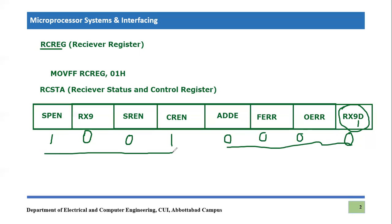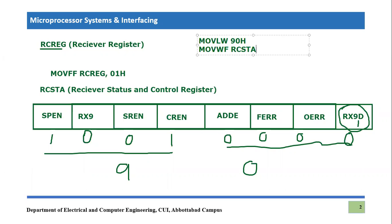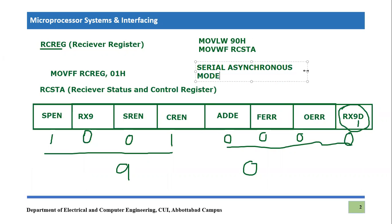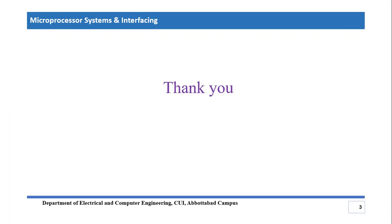So every time you use asynchronous serial port communication and configure the receiver, the first four bits will be 1-0-0-1 and the last four bits will be 0-0-0-0, giving us 0x90. You will write: MOVLW 0x90, then place it in the RCSTA register when programming the PIC18F for serial asynchronous mode. That is what we are doing in this course. If you have any questions, please post in the comment section. Thank you so much for listening.